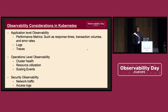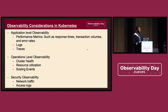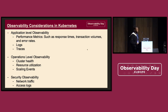In terms of observability in the cloud-native space, there are a bunch of things that we consider. I like to classify them in three levels: application-level observability, operations-level observability, and security observability.